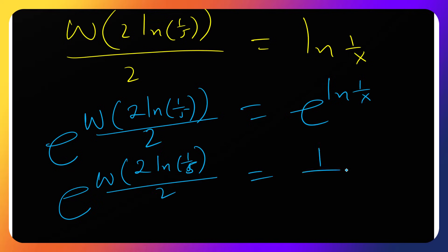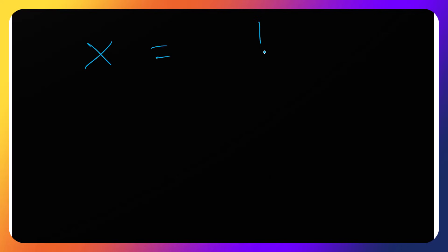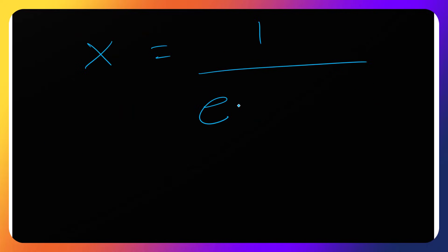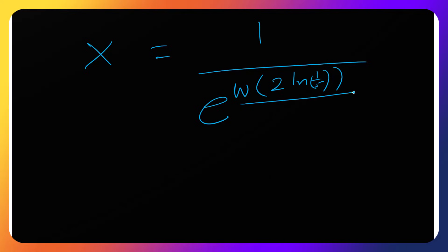Raising both sides as an exponent of e: e raised to W of 2 ln(1/5) over 2, equals e raised to ln(1 over x). Since e raised to ln of something returns that thing, the right side becomes 1 over x. So e raised to W of 2 ln(1/5) over 2 equals 1 over x. By cross multiplication, x equals 1 over e raised to W(2 ln(1/5) over 2).